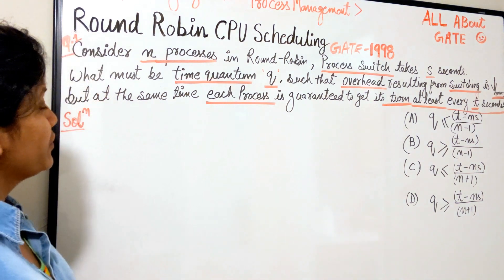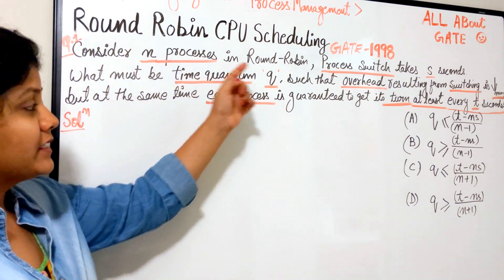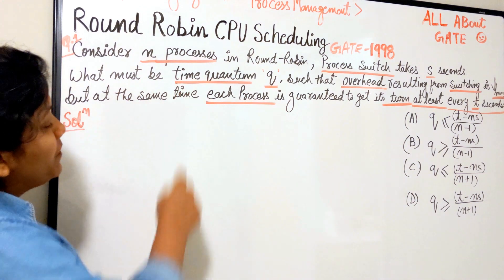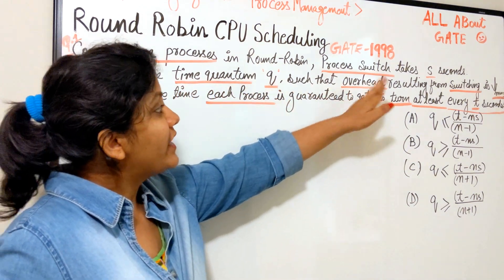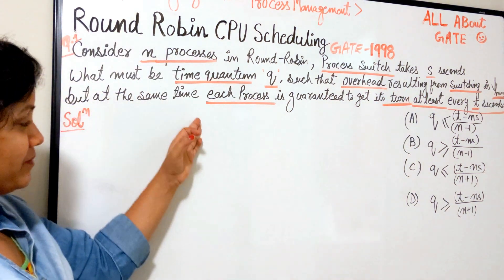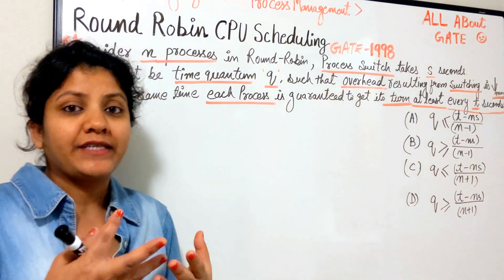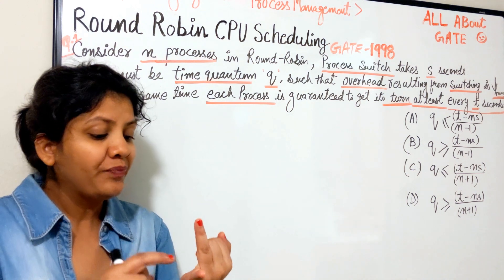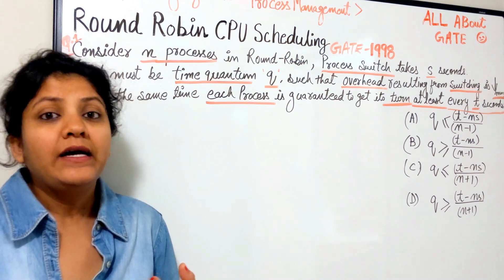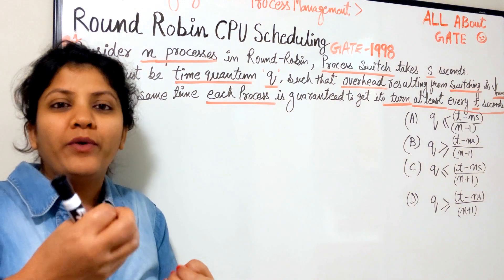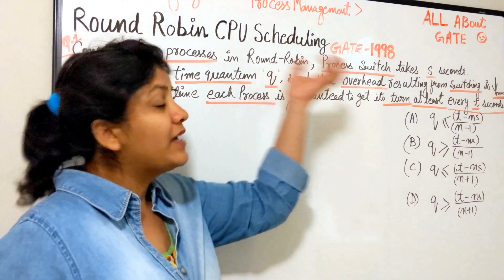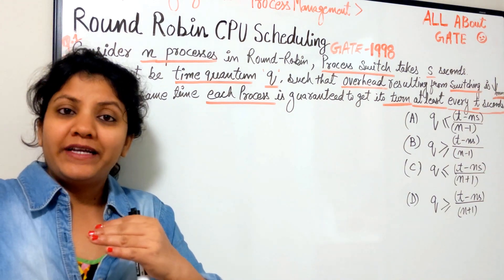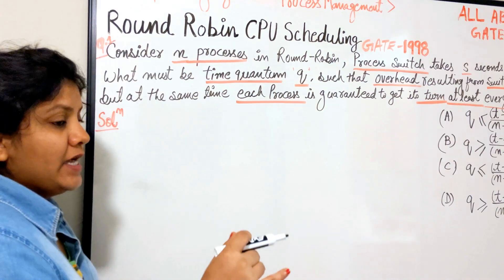The question says: consider n processes scheduled in round robin fashion. Each context switch takes s seconds. What must be the time quantum q such that the overhead resulting from switching is minimum, but at the same time each process is guaranteed to get its turn at least every t seconds? So we have n processes, every context switch takes s seconds, and we need to find q under the condition that each process gets its turn at least every t seconds.